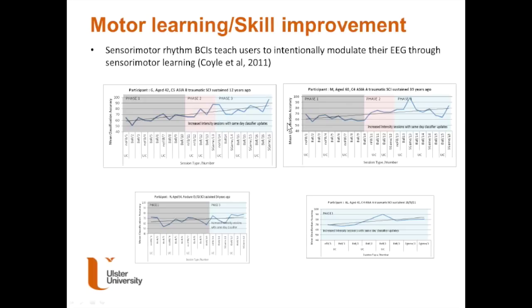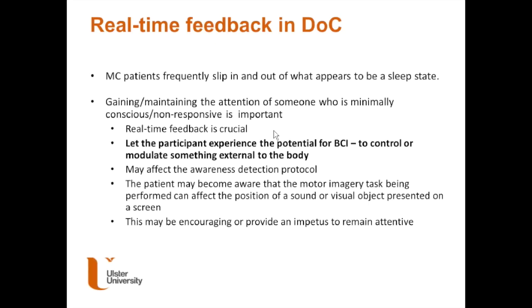Motor learning and real-time feedback improve a person's ability to modulate their sensory-motor cortex. Many earlier studies of vegetative state didn't provide feedback. We have conducted trials showing patients that they may be able to influence a signal outside the body by imagining movement. In initial sessions with able-bodied and physically impaired participants alike, we often don't see clear evidence of motor imagery modulation, but over time they learn from feedback and improve — so providing feedback is important in consciousness assessment as well.